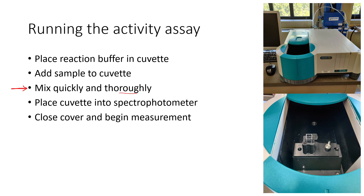I recommend trying out the mixing on one of your samples where you're not expecting too much LDH — one of your washes, for example — just to get the hang of it. Once your sample is in the cuvette and mixed both thoroughly and quickly, place it into the spectrophotometer. Make sure the path of light goes through the clear parts of the cuvette — the clear sides allow the light to pass through, and the cloudy sides are opposite. Close the cover, then begin the measurement at 340 nanometers over time. You'll get a separate sheet in the lab on how to actually operate the spectrophotometer.